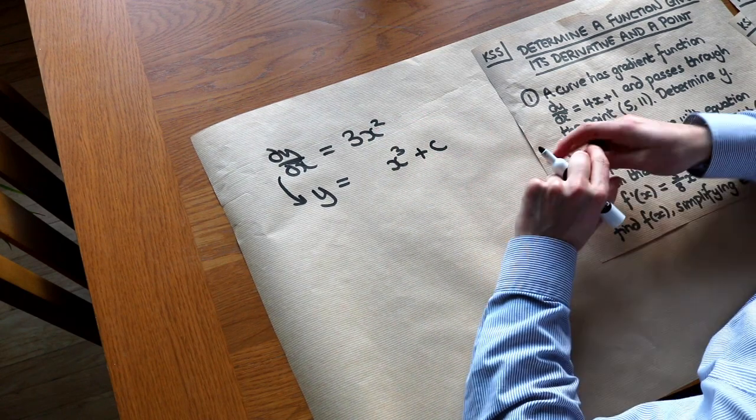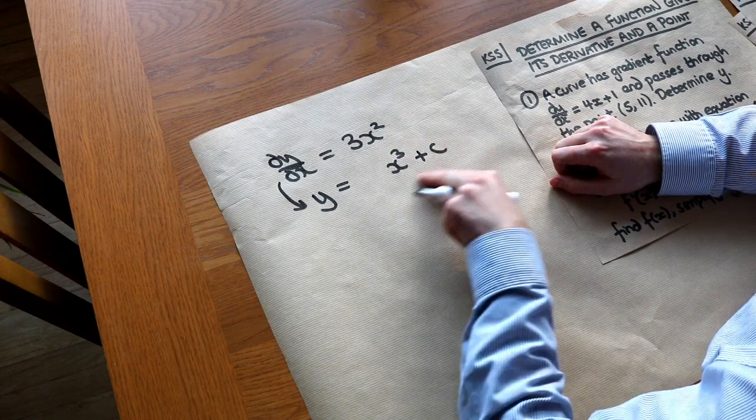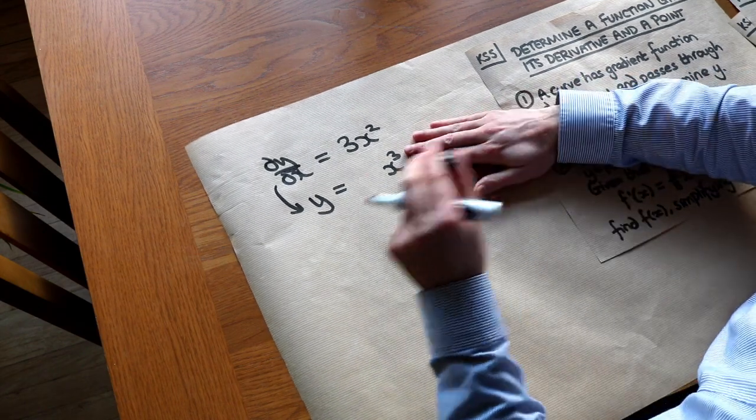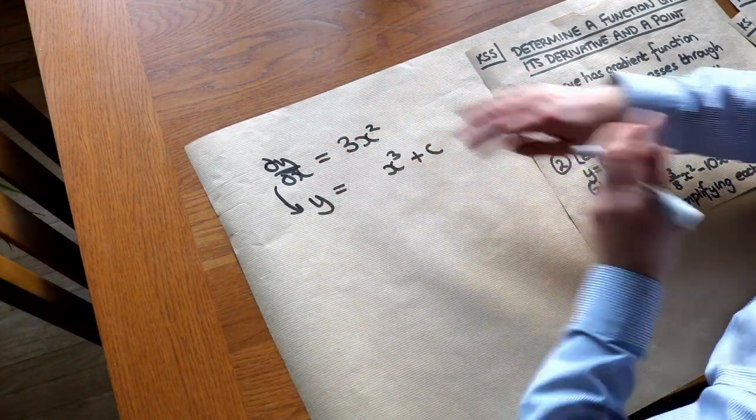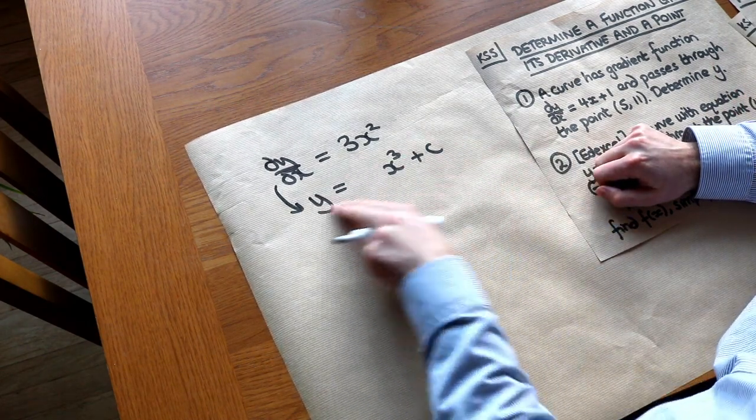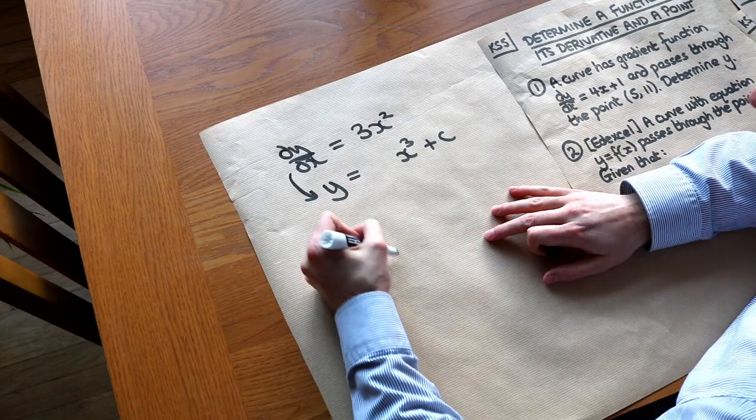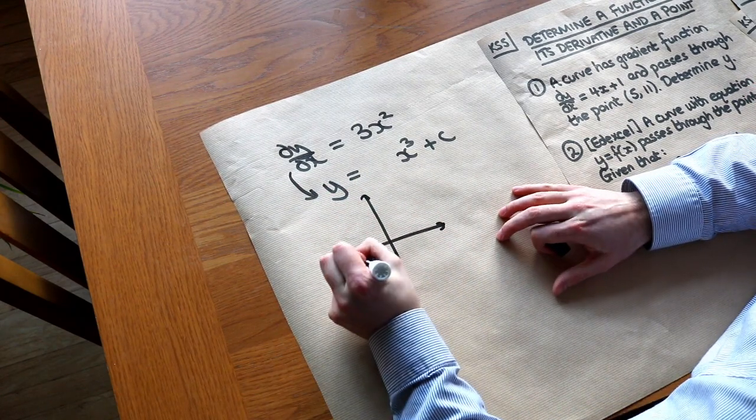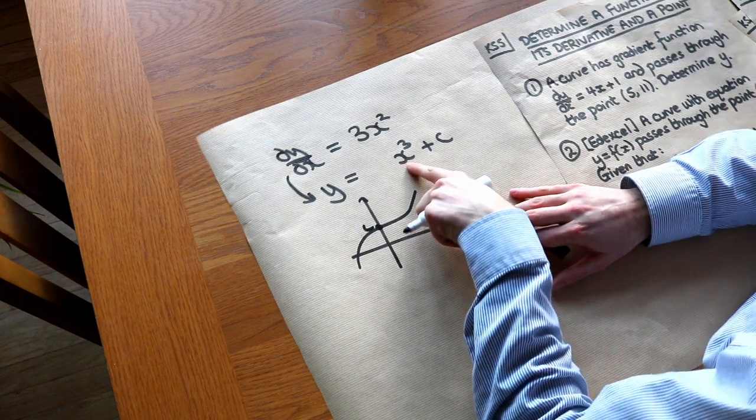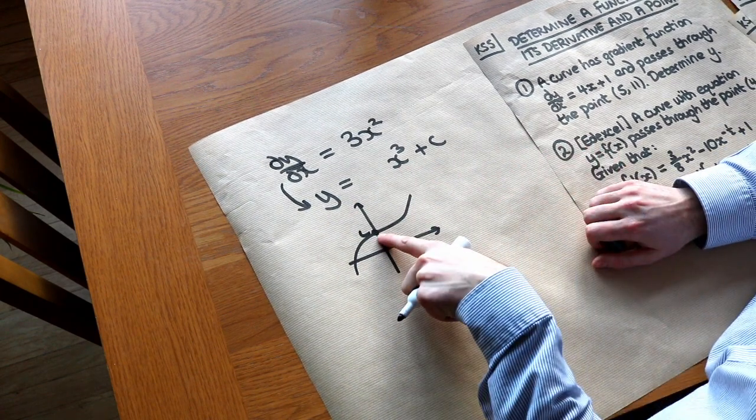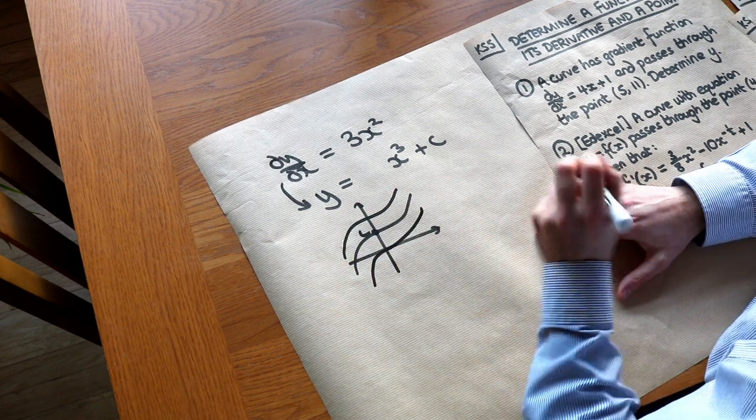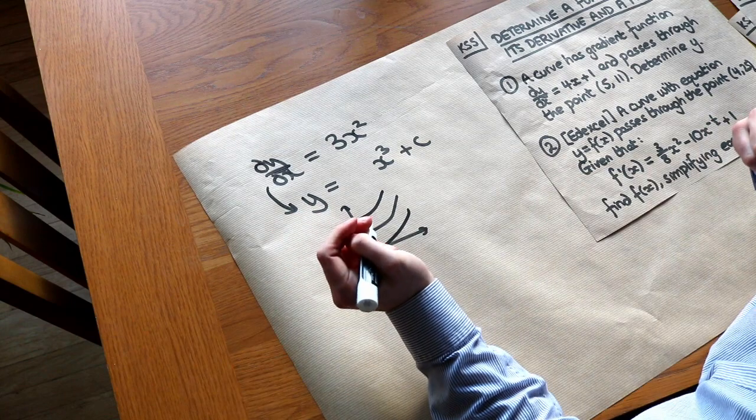And the reason why we had this plus c is because if I was to differentiate this, that would become 3x² and that plus c, the constant, would just disappear. So it would indeed become 3x² and that could be any constant you like. So we don't actually know what the original function was. We know it looks something like this, where the y-intercept is c and it has this particular shape because it's a cubic. But we don't know where that c is. It could have been here if the c was 0. We don't know what the original function was.